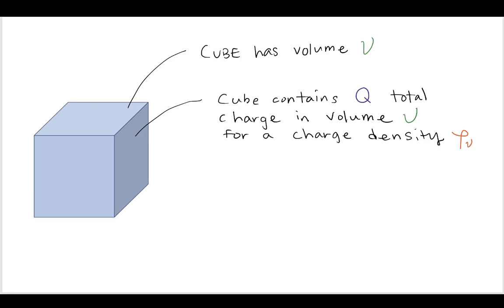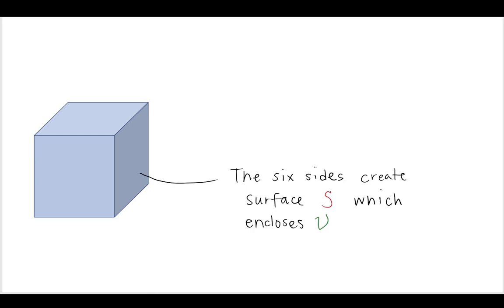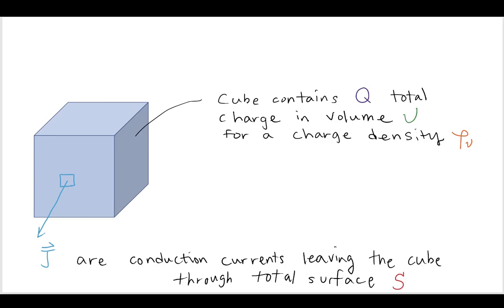Now, when you look at this, you can then say that that creates a charge density. So the Q per volume, that's a charge density, ρv. Now, each of the six sides on this cube create a total surface S, which encloses that volume V.